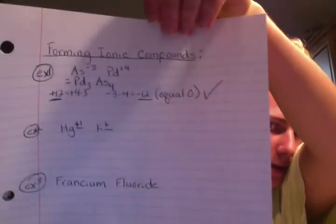For the next one, HG and K are both positive — they both have positive charges. So what does that tell you? That answer is not possible. And just to make sure, you can check by doing plus one times one equals plus one, and plus one times one equals plus one. That shows you they're both positive — not possible.